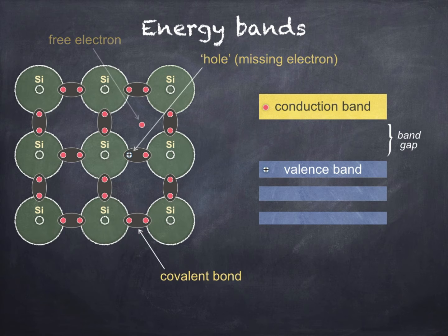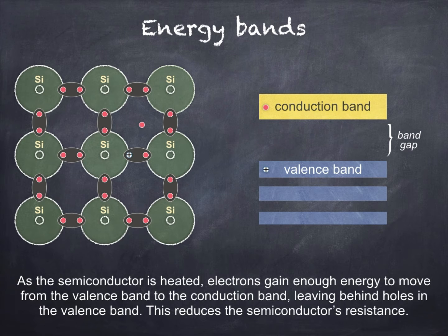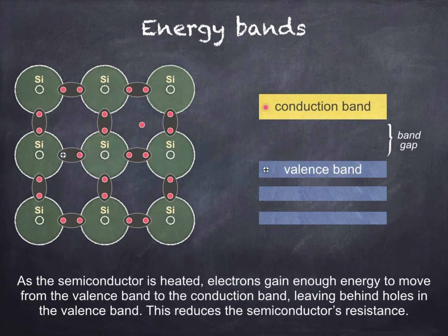As the semiconductor is further heated, more covalent bonds are broken, resulting in more electrons jumping to the conduction band, with more positive holes created in the valence band. So, as the temperature of a semiconductor increases, its resistance decreases, due to the motion of the electrons in the conduction band and holes in the valence band. Looking at the diagram on the left, we can see that electrons from neighbouring atoms can move to fill a hole, leaving behind a hole in their previous position. Although strictly this was caused by the motion of negative electrons from left to right, we can also describe it as the motion of positive holes from right to left.